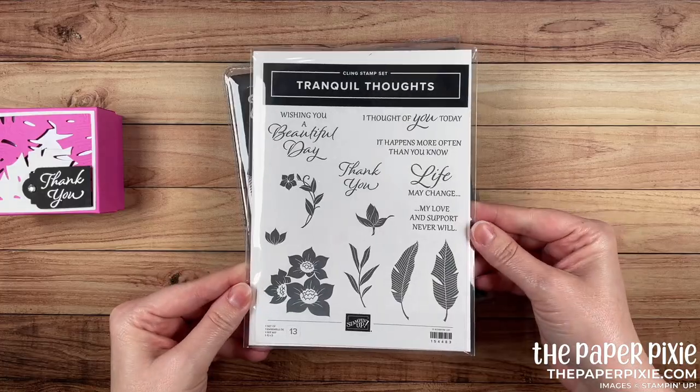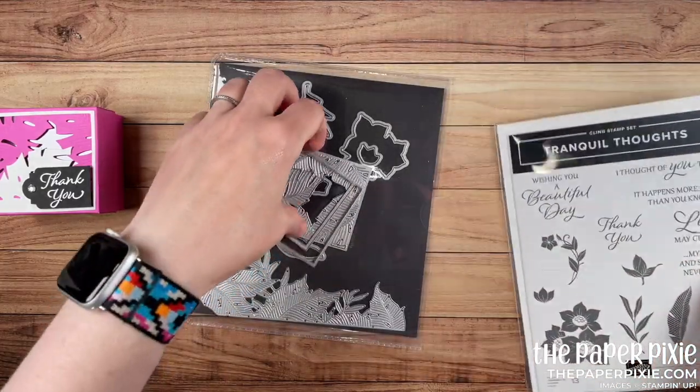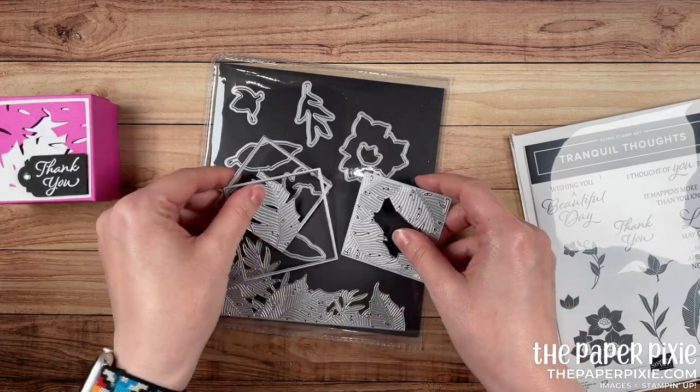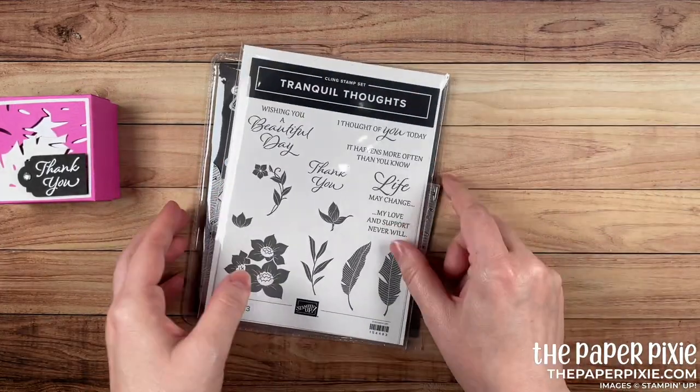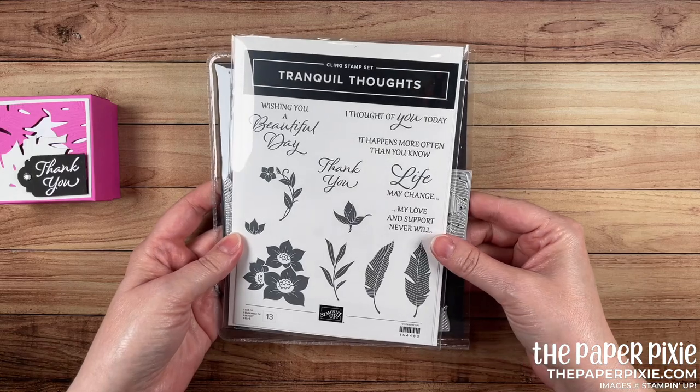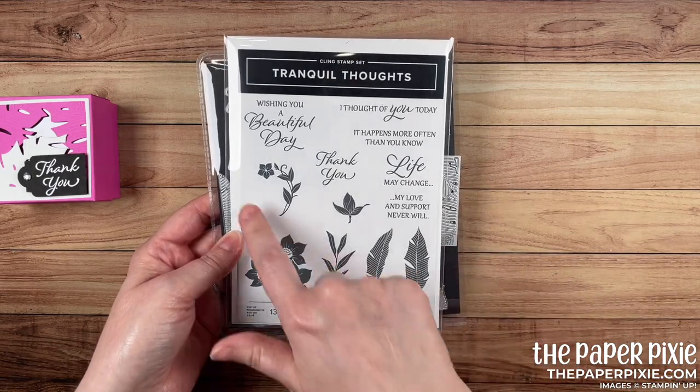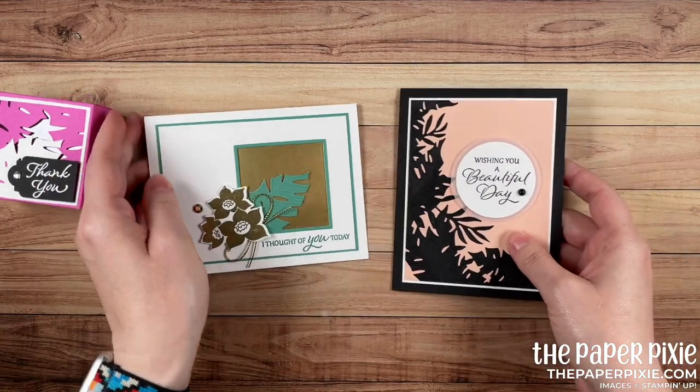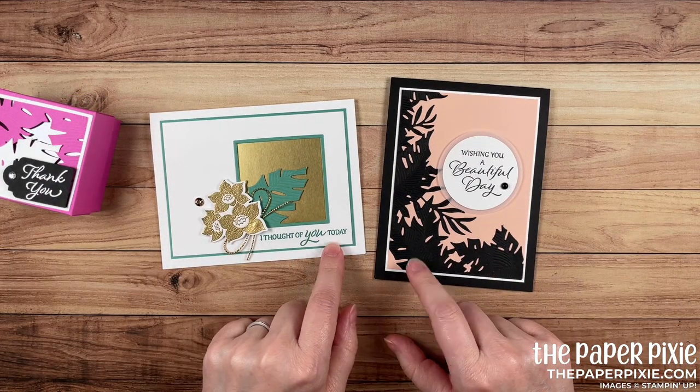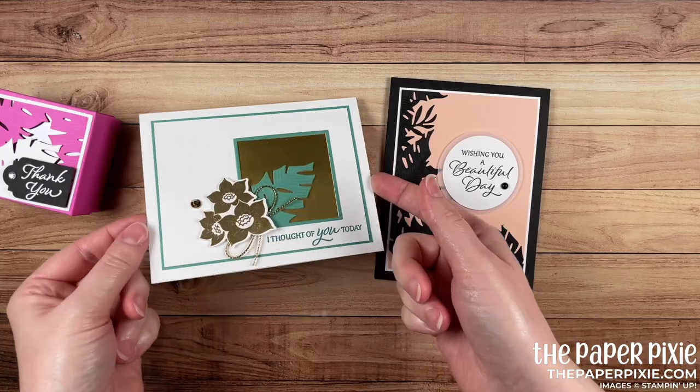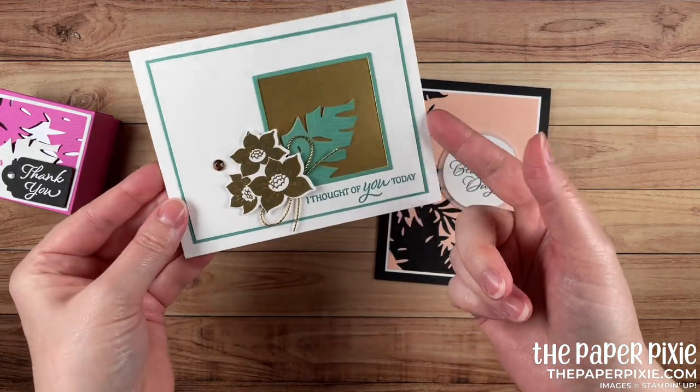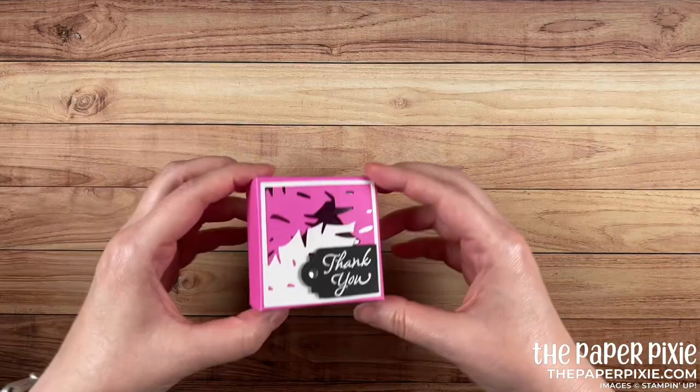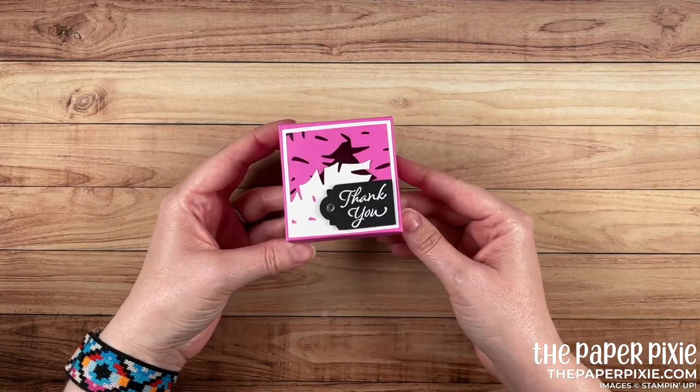Here's a quick peek at the stamp set and then the set of dies. I love this bundle, it's from the January to June 2021 mini catalog and I love the sentiments and these bold images. I also had fun creating these two cards as well. I shared these on my live stream this week, two totally different cards. I love the different looks you can get with this bundle. So let me show you how easy this gift box is to make.